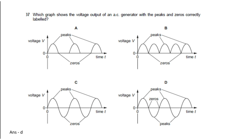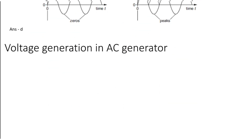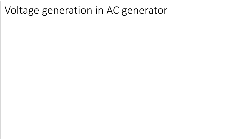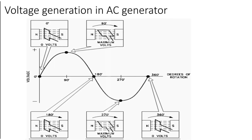The next question: which graph shows the voltage output of an AC generator with the peaks and zeros correctly labeled? We will look at where voltage generation is at a peak and where it is zero. When the coil is at 90 degrees and 270 degrees, that is the peak position and the voltage generation is maximum.